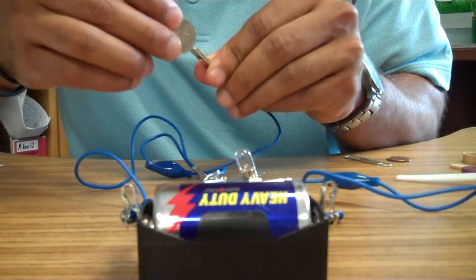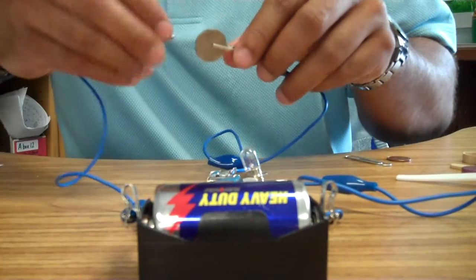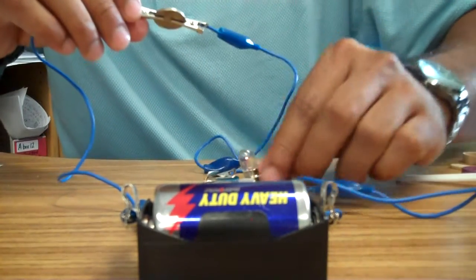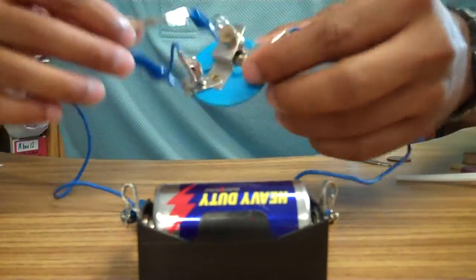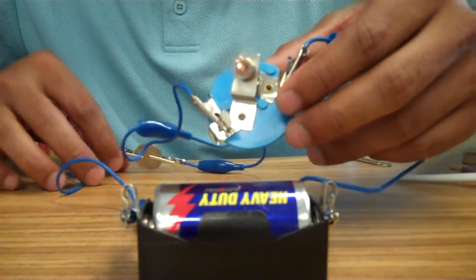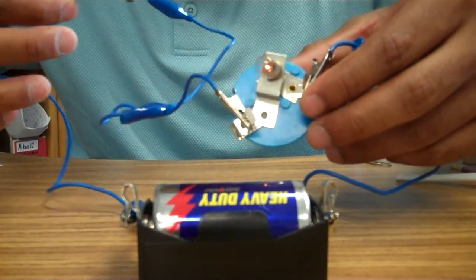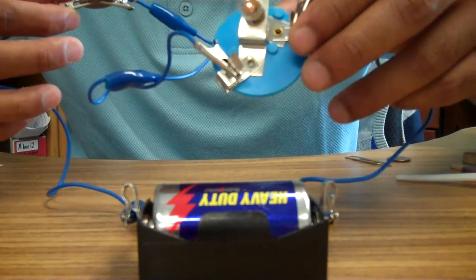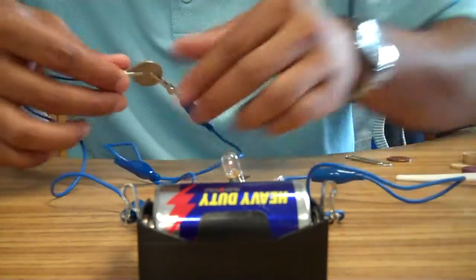Let's try a coin. What happens here? What happens is electricity does pass through a coin because it is a metal and there is a reason the bulb glows. Let's try another one.